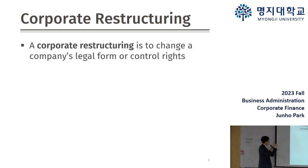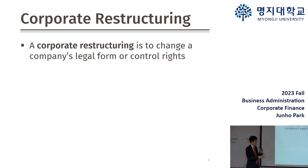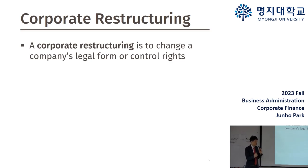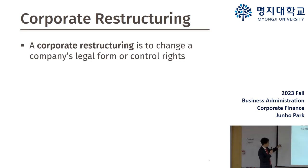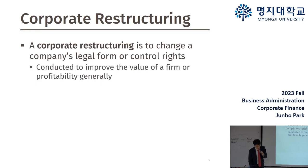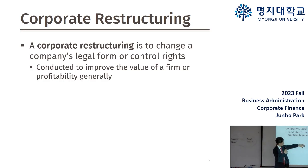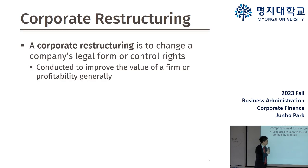M&A is a form of corporate restructuring, which means changing a company's legal form or control rights. Generally, corporate restructuring implies there is a certain problem to solve. Through this kind of restructuring, a firm may seek to achieve a value increase or profitability increase.